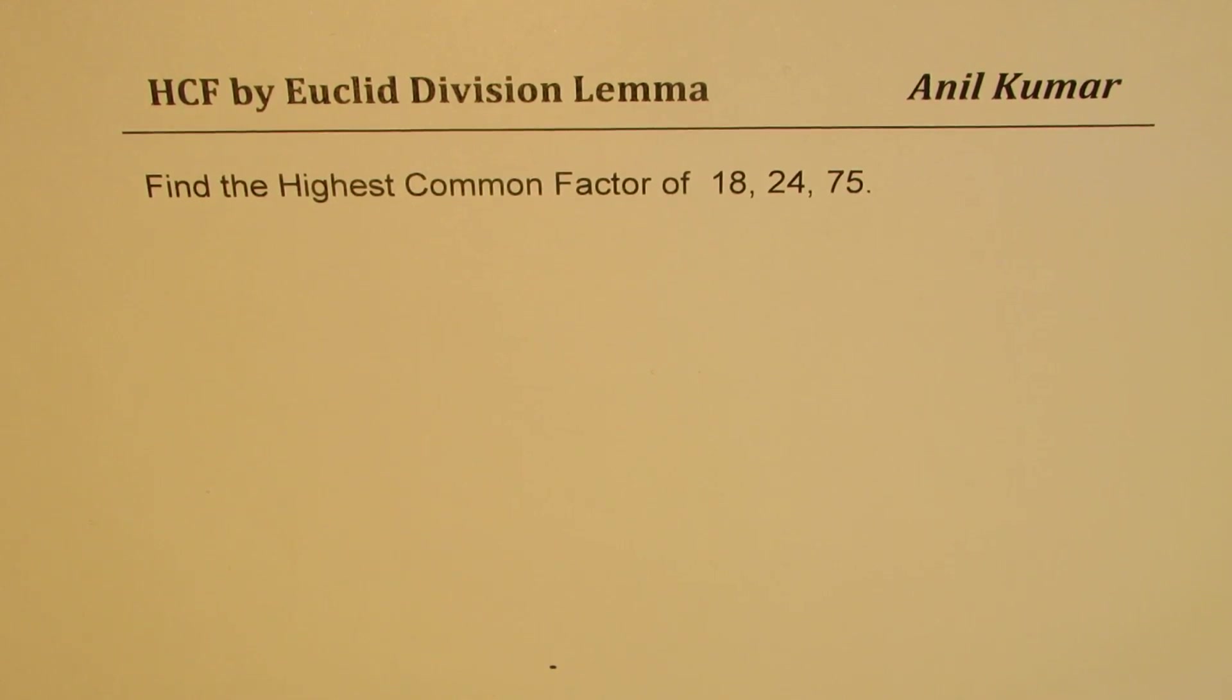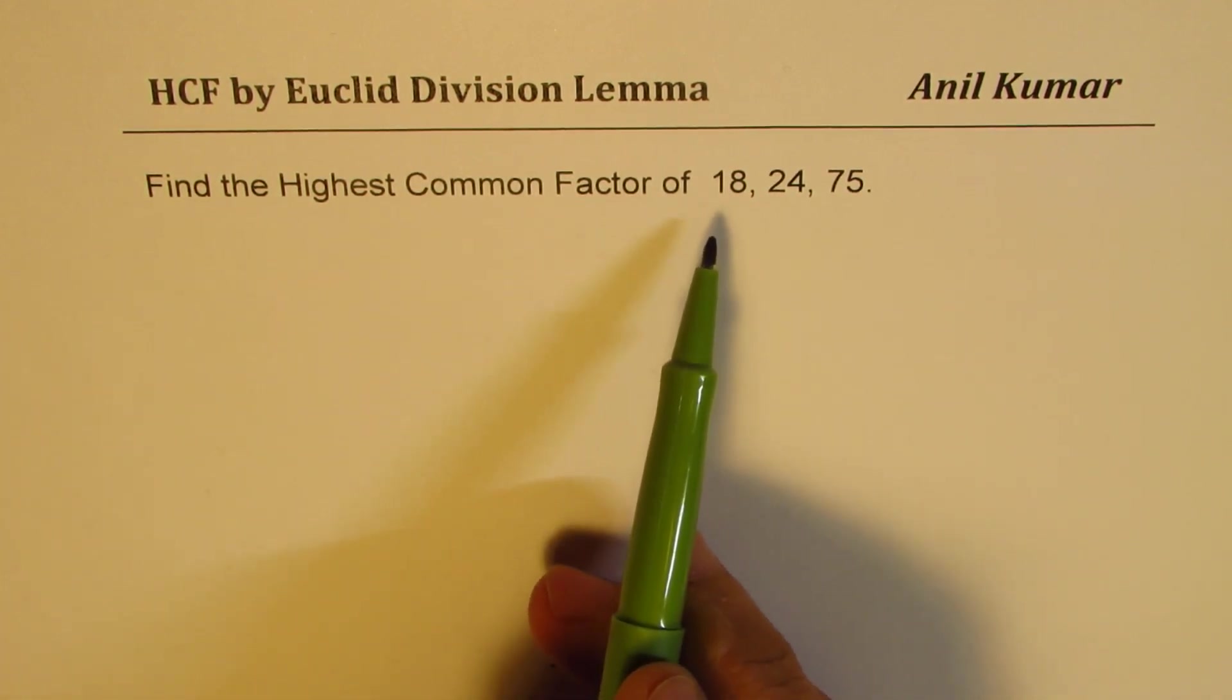We need to find the highest common factor of the numbers 18, 24, and 75. I'm going to use Euclid division lemma. This method is one of the most efficient methods to find the highest common factor. It's kind of repeated division.